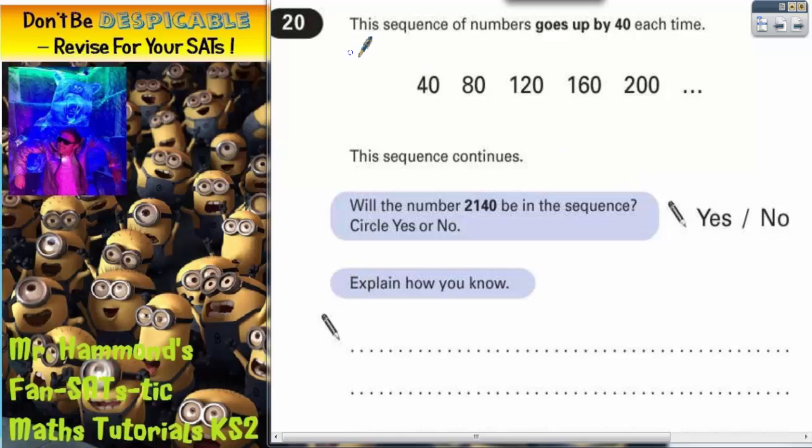Question 20. This sequence of numbers goes up by 40 each time. 40, 80, 120, 160, 200. And the sequence continues.